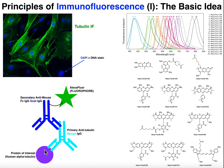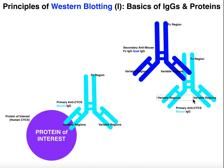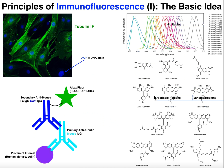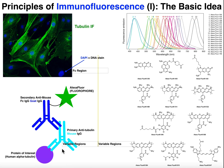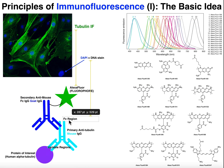Remember from one of the previous videos that the part that directly binds to the protein — the specificity part — these are the variable regions. So these are your variable regions right there. And also remember, the FC region is the part up at the top, which is the constant region of the antibody.